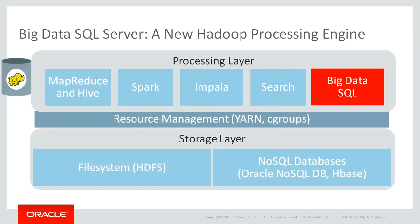Big Data SQL is another process which you run on every single Hadoop node, on every single data node. It processes data which you store on HDFS or a NoSQL database. We don't bring anything special to the storage layer — on the storage layer we work with HDFS or NoSQL data. We don't do any specific optimizations for storage; we just put our processing engine on the HDFS side.